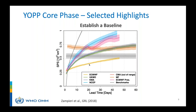The most obvious finding is that the structure and performance of different models is widely different. Some models lack skill even at short lead times, while others — like the ECMWF model — show skill predicting out to 40 days and beyond. This tells us we are still in a relatively premature stage of sub-seasonal prediction of Arctic sea ice. A similar analysis for Antarctica shows the skill is generally not as high as in the Arctic.